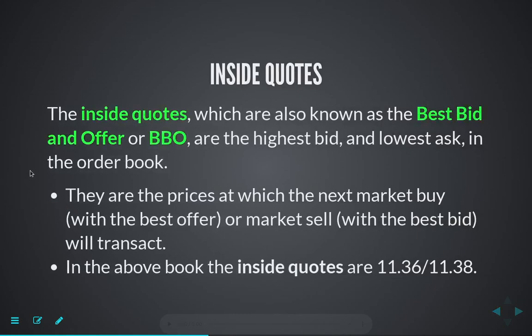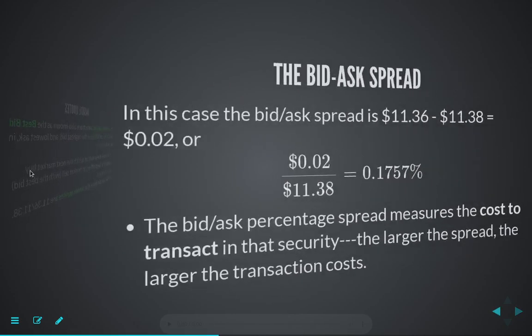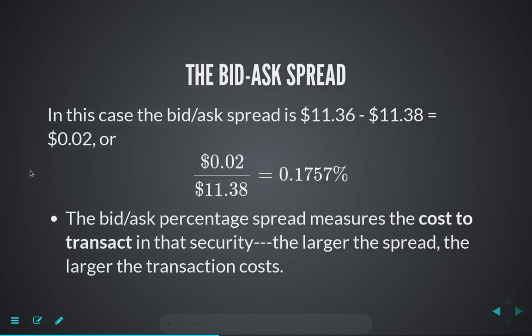We talked about the inside quotes. One quick thing to say is we have the bid-ask spread. This is a transaction cost — when you trade, often people think commissions are their only transaction costs. You have commissions that your broker may charge, but you're also paying the bid-ask spread.